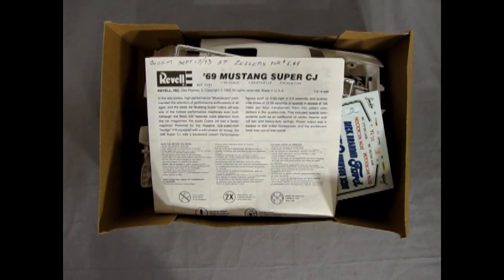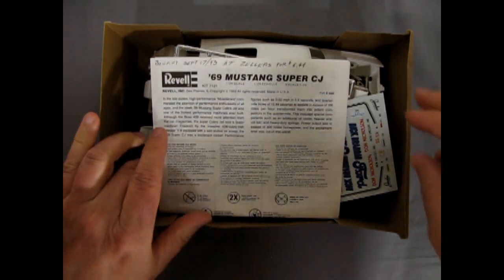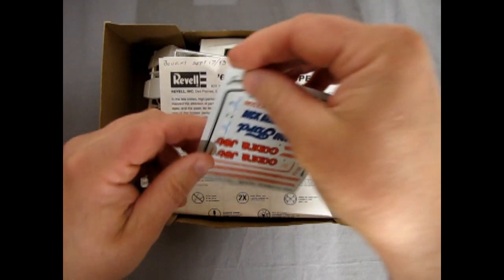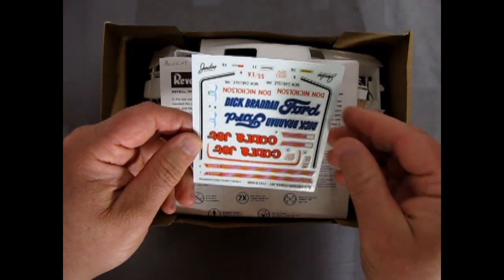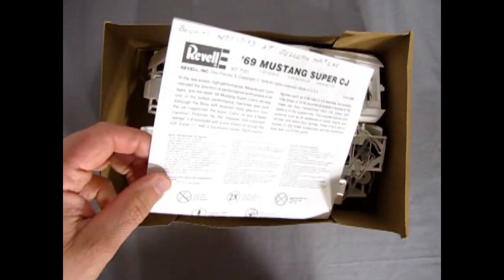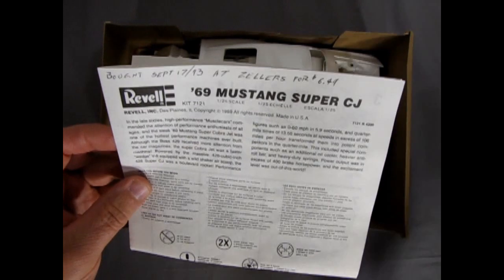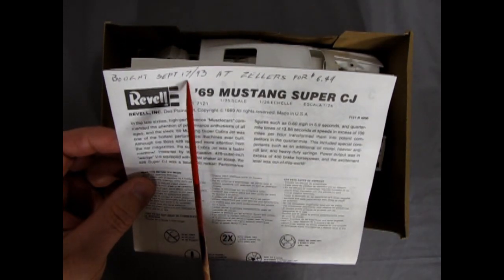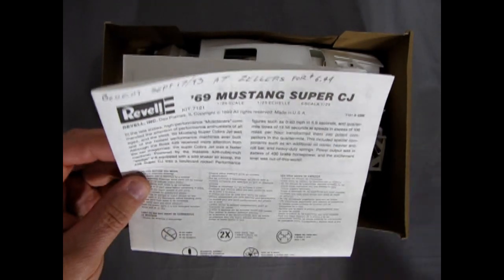Ah okay. There we go. Oh okay so it's Dick Brennan, Dick Brennan Ford. There we go. So yeah there's our decal sheet. And then our instructions. I bought this September 17th 1993 at Zeller's for $6.49. Hallelujah those were the days.